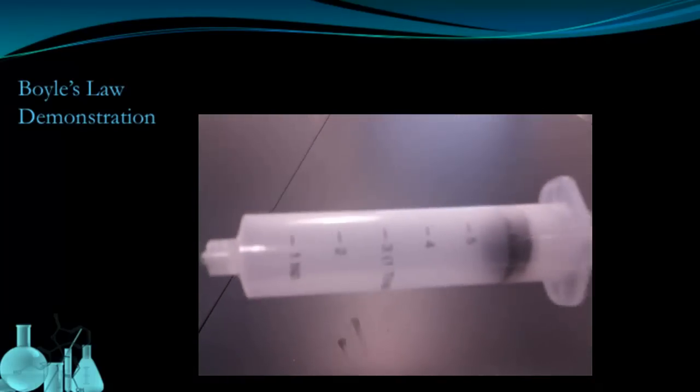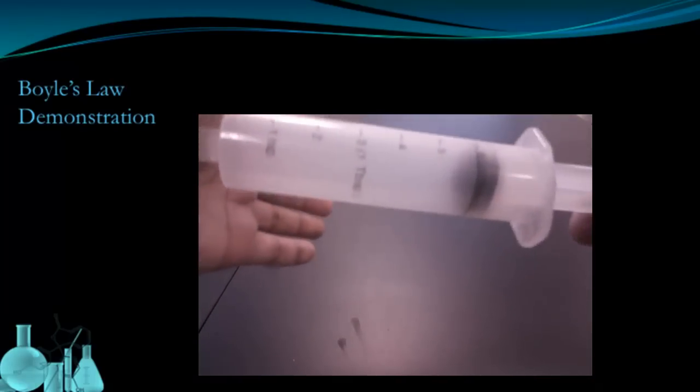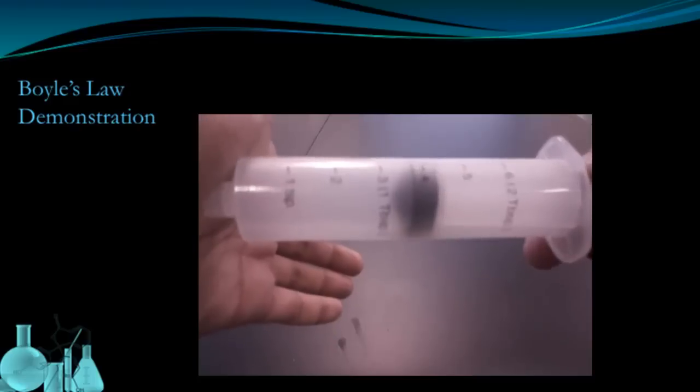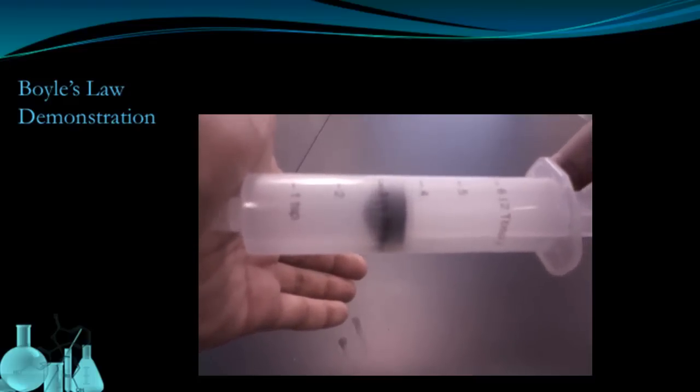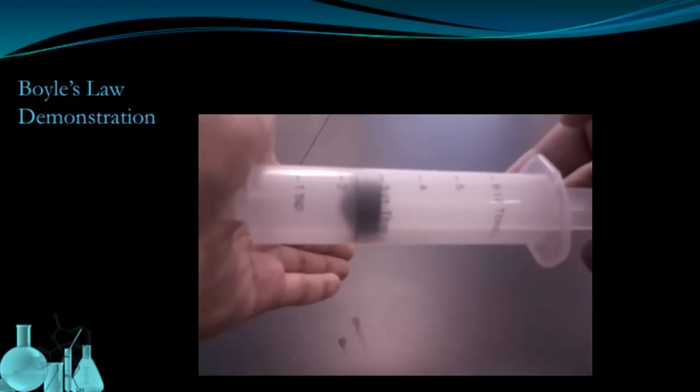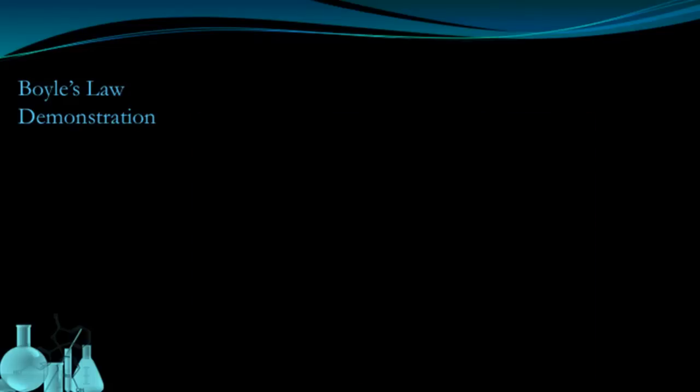Here I'm holding a syringe filled with air. If I add pressure, pushing in the plunger, we can see that the volume gets smaller. So in this example, as pressure goes up, the pressure that I'm applying, the volume of the air gets smaller. The volume goes down.